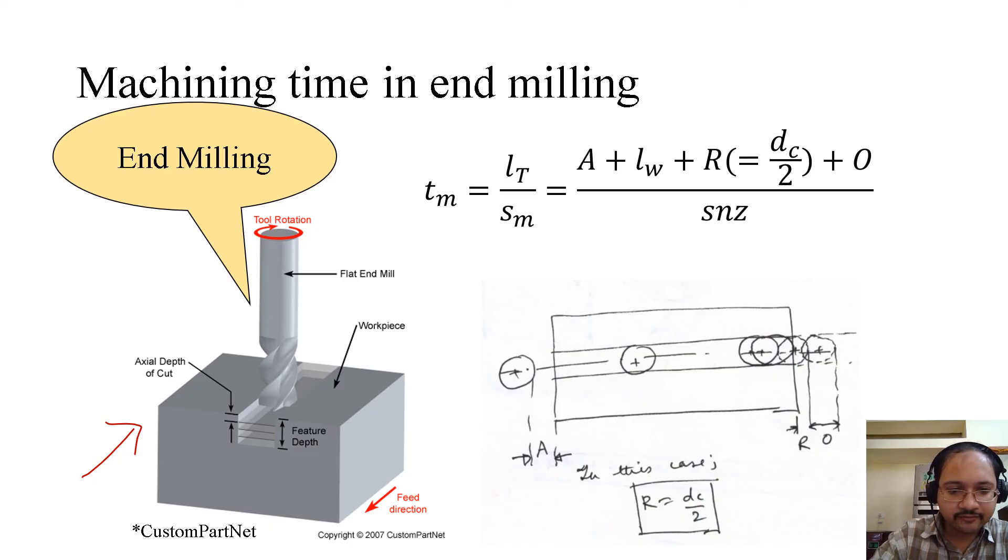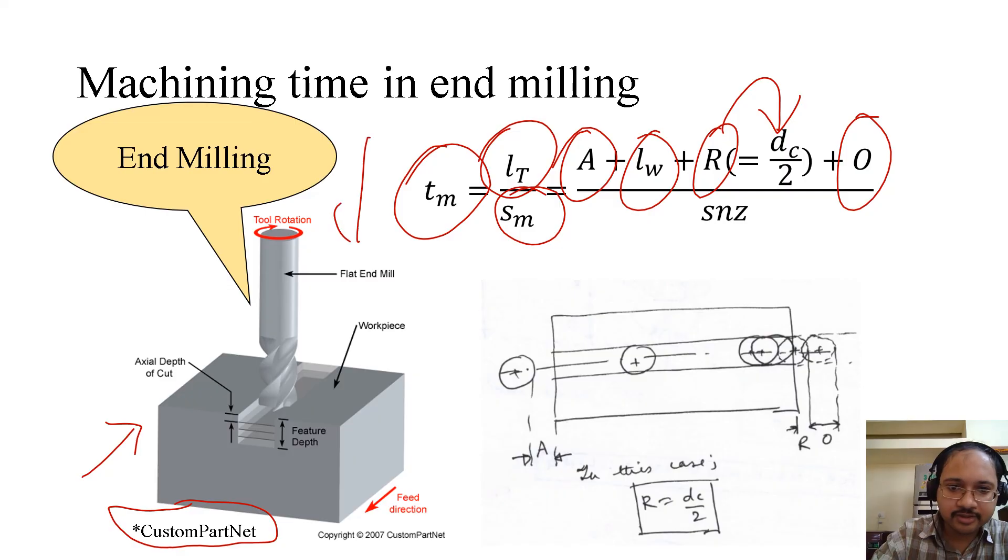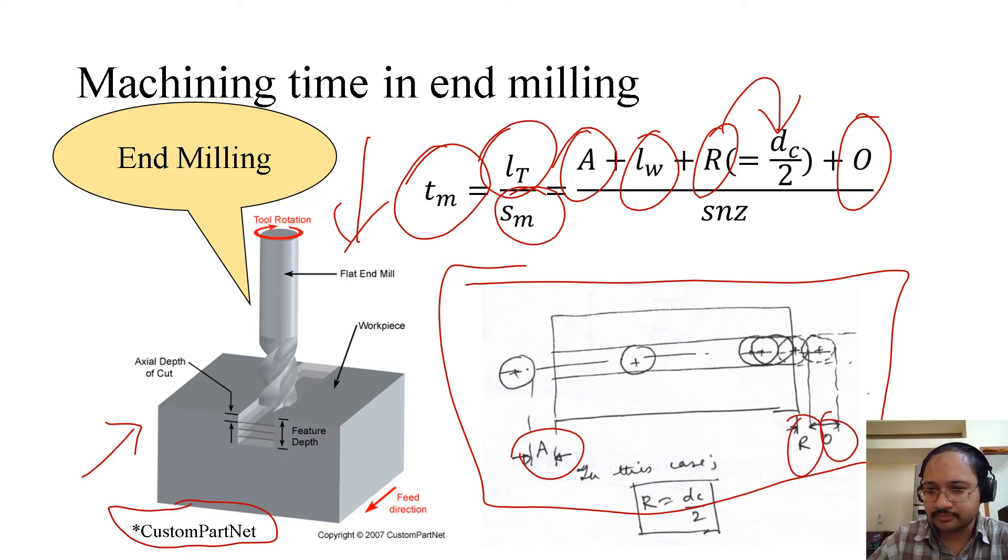This is the front view. This is also taken from custompart.net. What it shows here is that machining time is lt over sm, which is like the previous one - that is A, lw, R. But here R is nothing but half of the cutter diameter plus over travel. Now if we look it from the top, we will see this view where we can see the approach R and O. So what is R? This is half of the diameter of the cutter.